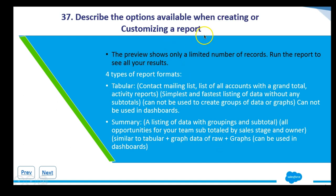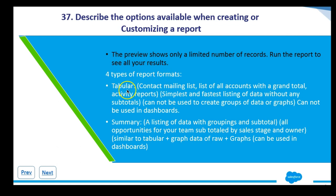Describing the options available when creating or customizing a report: the preview shows only a limited number of records — you will have to run the report to see all of the results. There are four types of report formats. The first is tabular, which shows you things like a contact mailing list or a list of all accounts. Tabular is essentially just a list, similar to an Excel spreadsheet.